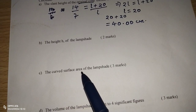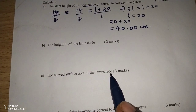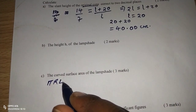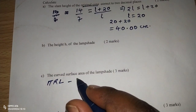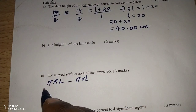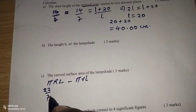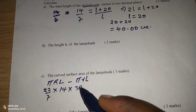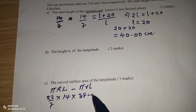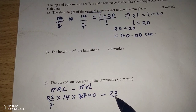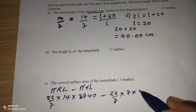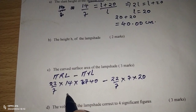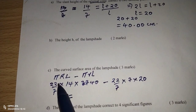For part C, we find the curved surface area of the lampshade. The curved surface area of a cone is πrl, so for the frustum we take the curved surface area of the original cone minus that of the smaller cone: (22/7 × 14 × 40) − (22/7 × 7 × 20).